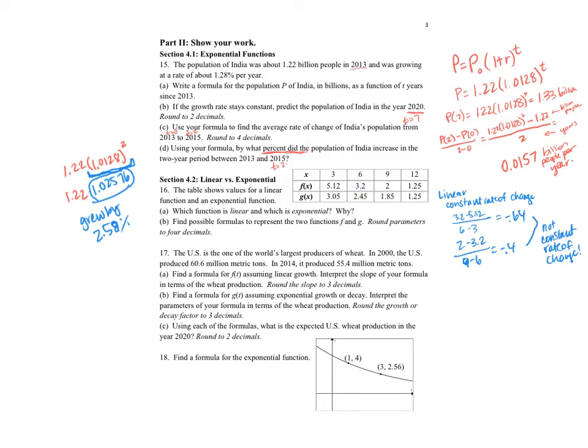We can check to see if F is exponential by looking for a constant percentage change. One thing I'm going to note is that the data are evenly spaced because it goes 3, 6, 9, 12. So I can check for a constant percentage change just by doing the division. 3.2 divided by 5.12 gives 0.625. If I do 2 divided by 3.2, I get 0.625. And 1.25 divided by 2 is 0.625. So I do have a constant percentage change, and we can say that F is exponential.